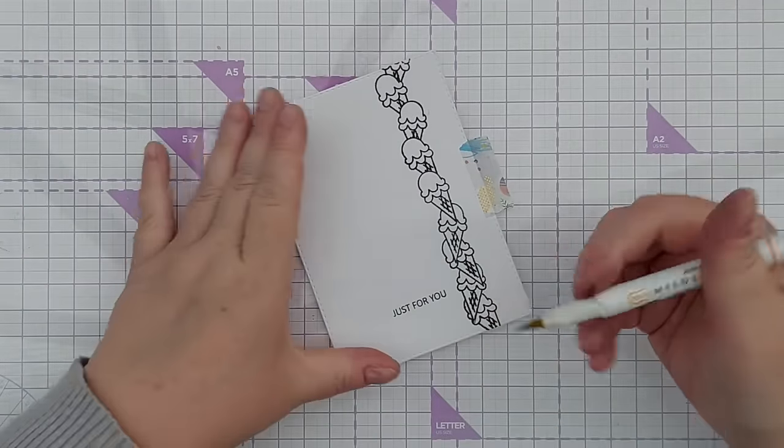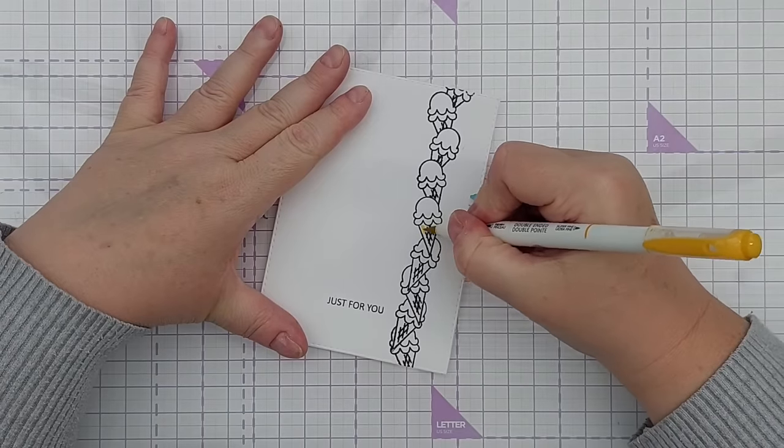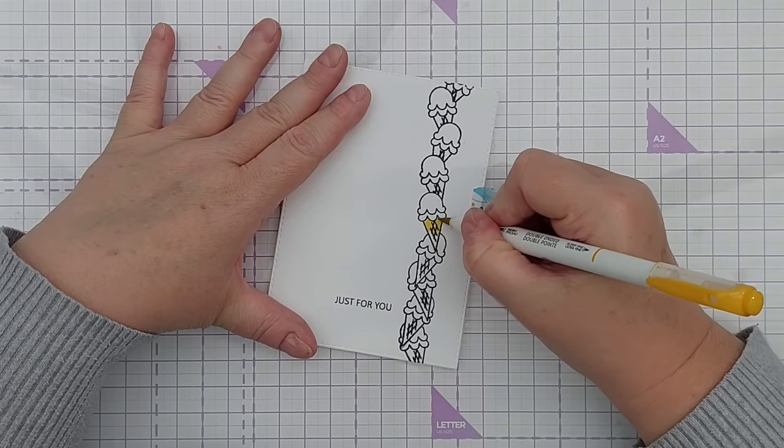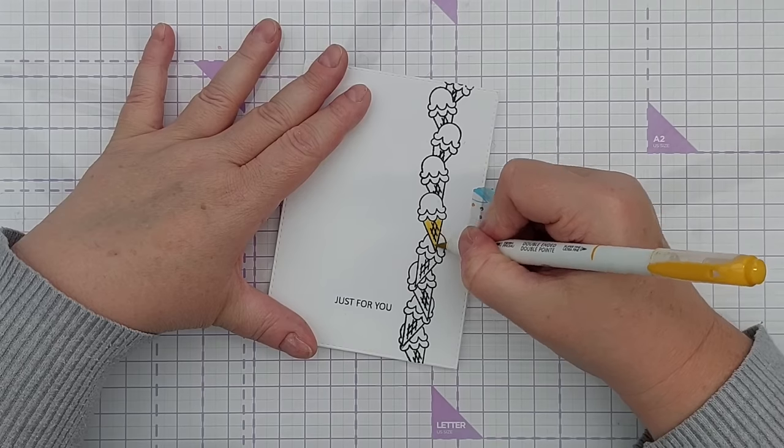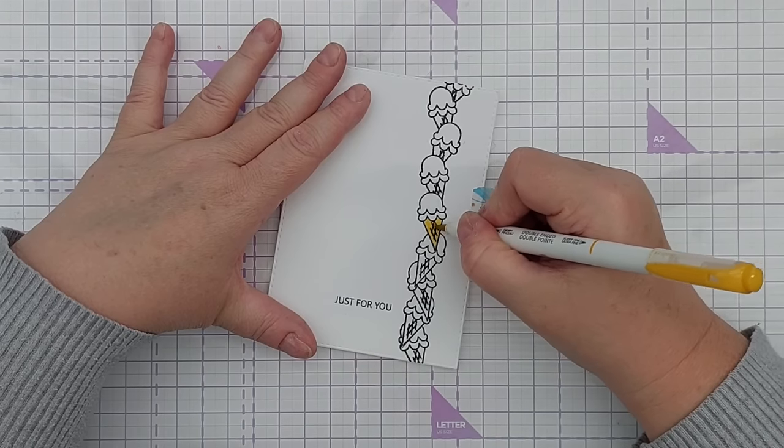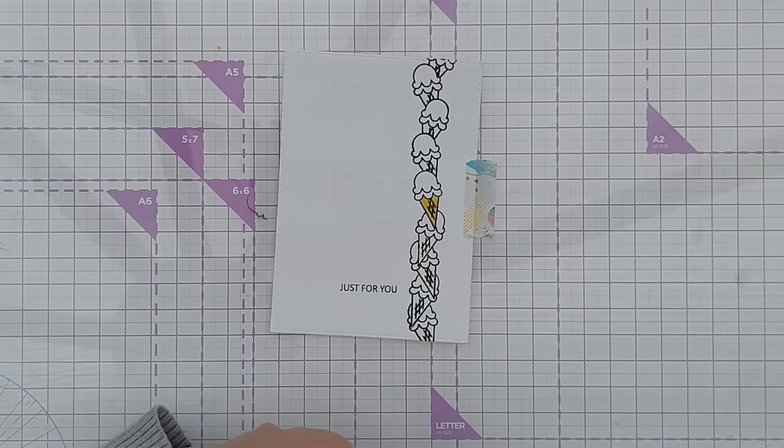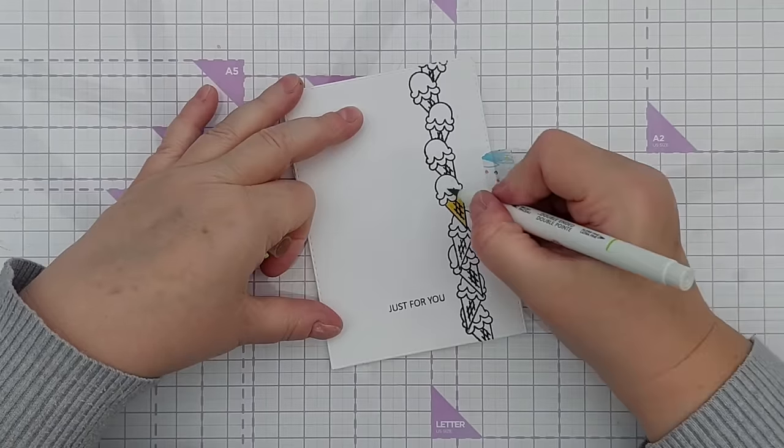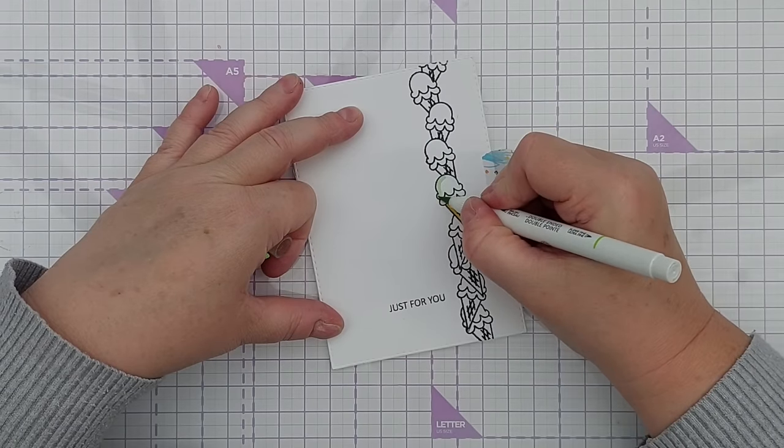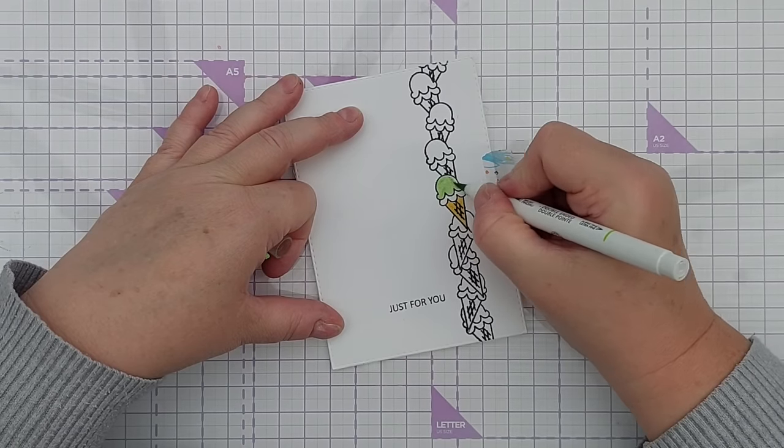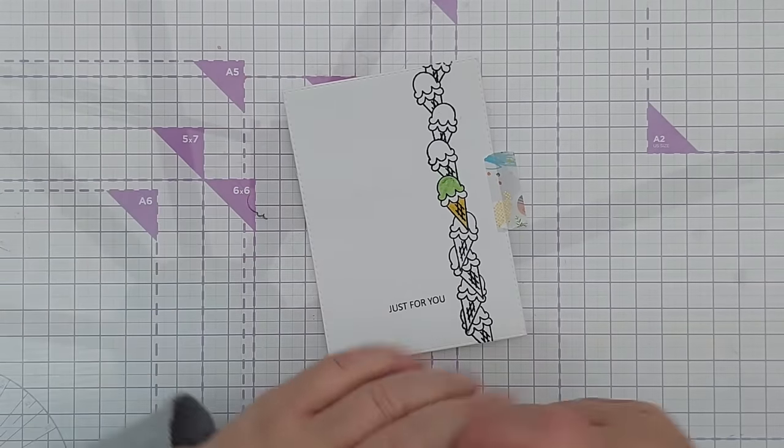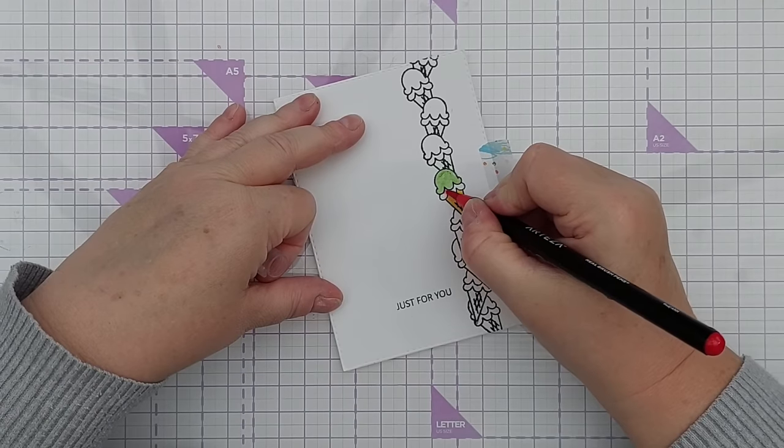I've added a little 'just for you' sentiment and I'm going to color in my ice cream using my pens direct to paper again. I'm going to put the boldest colors on the middle ice cream to highlight it and I think we're going to go mint chocolate chip with some raspberry underneath.